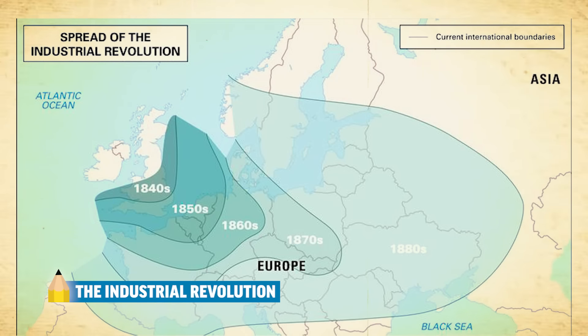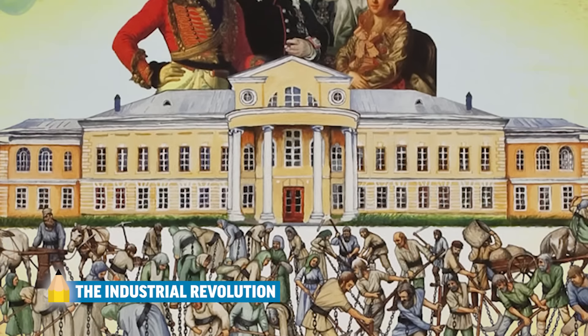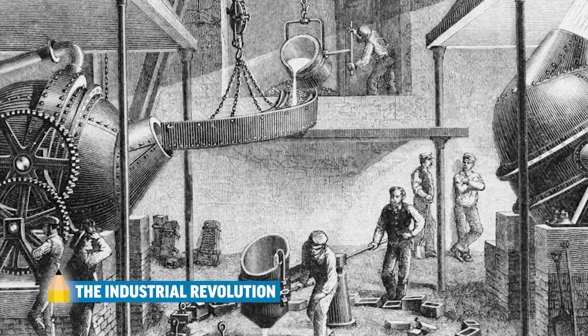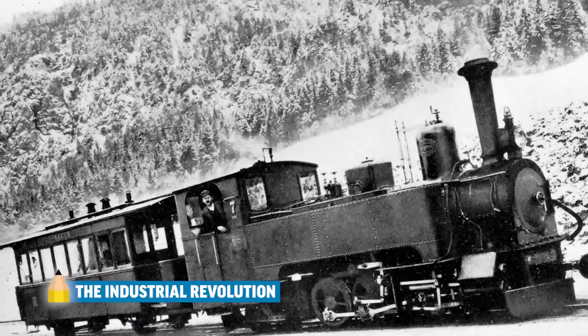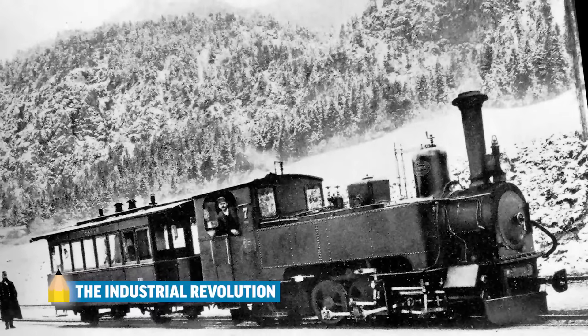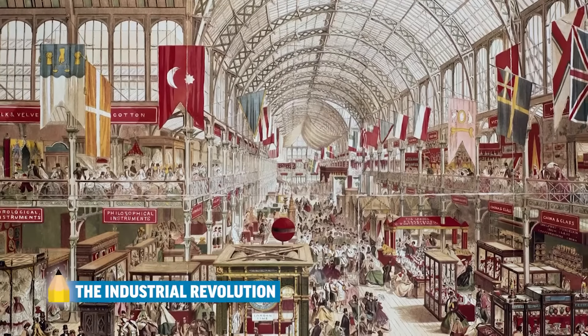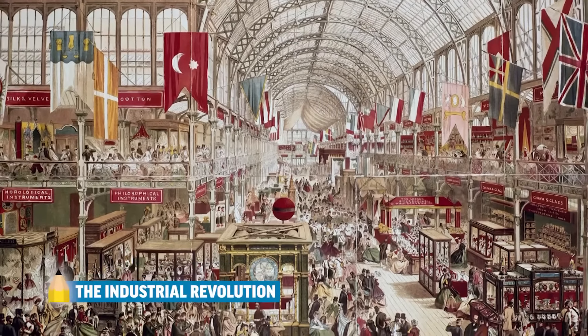Industrialization starts in Britain but spreads throughout continental Europe, though it lags in the east due to a lack of resources and the persistence of serfdom. New technologies like the Bessemer process, electricity, and chemicals emerge in the second wave of industrialization and spread quickly across Europe due to new transportation technologies like the railroad and steamships. In 1851, Britain showcases its glory at the Great Exhibition, a world's fair highlighting its industrial supremacy.